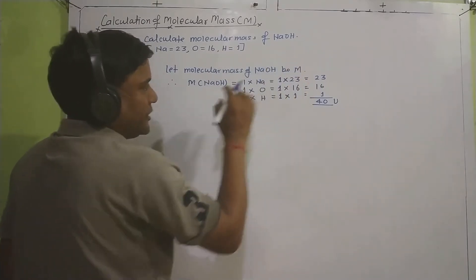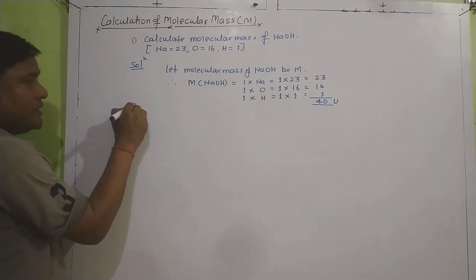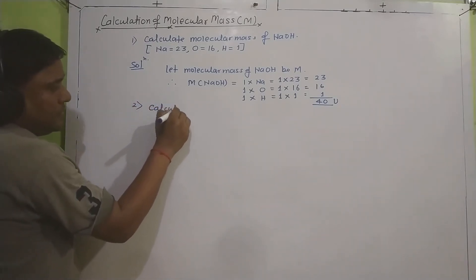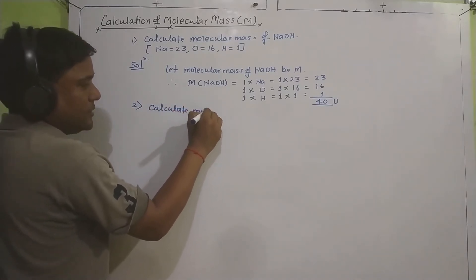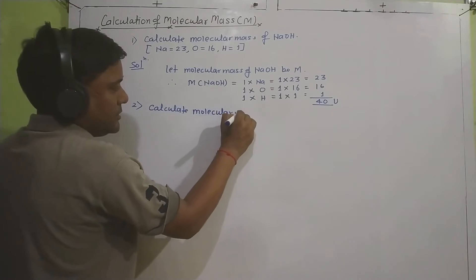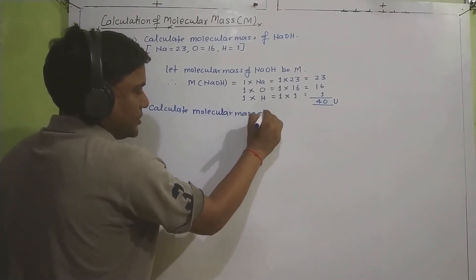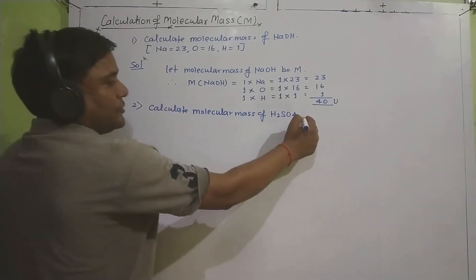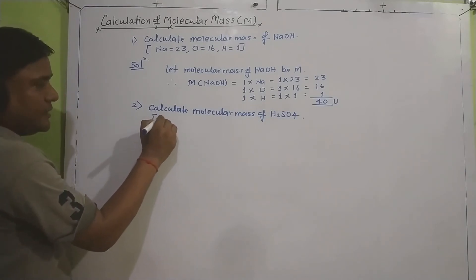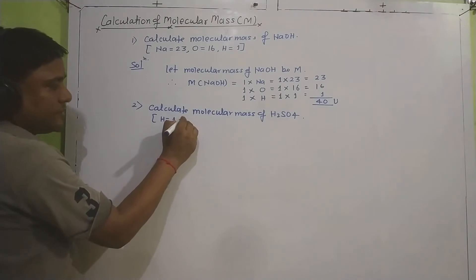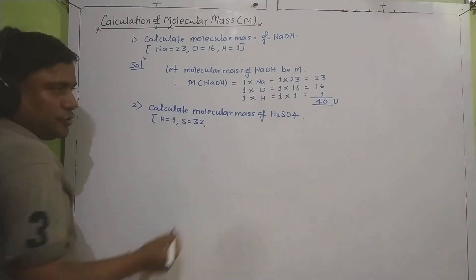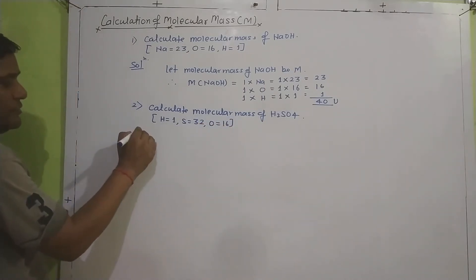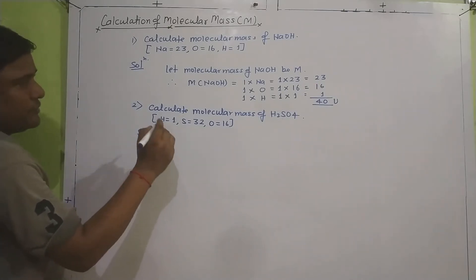Let's take another example: calculate the molecular mass of H₂SO₄. The data given is: H = 1, S = 32, and O = 16. We will now solve this problem.